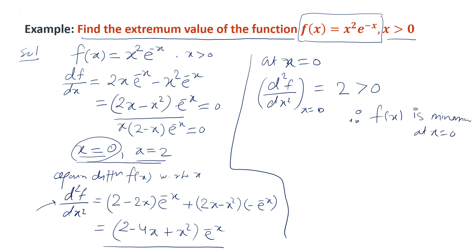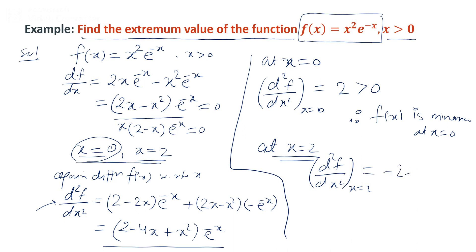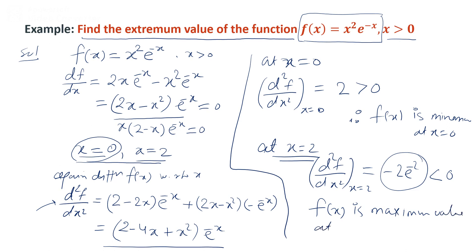At x = 0, the second derivative equals 2, which is greater than 0, so the function f(x) is minimum at x = 0. At x = 2, the second derivative equals -2e^(-2), which is less than 0, so the function f(x) has a maximum value at x = 2.